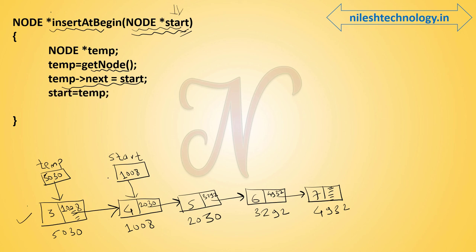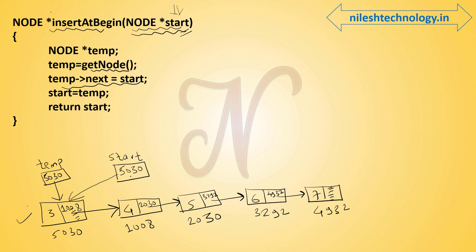So temp->next is now pointing to address 1008. The next line is: start = temp. Now start is pointing to the temp node. We remove the old start address, and start now points to the new node at address 5030. The insertion at the beginning is complete.